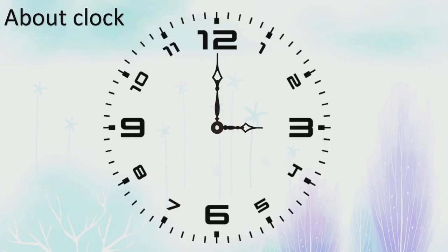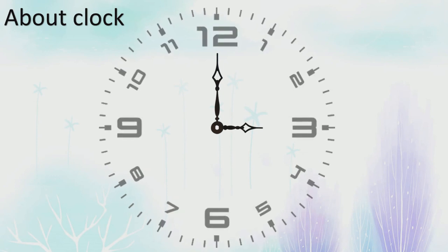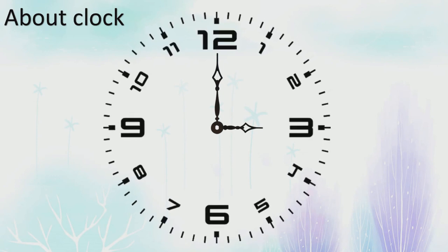Our next heading is about the clock. Let's understand how to read time on a clock — it is very interesting. Kids, the clock has numbers and lines on it, and this is known as the face of the clock.